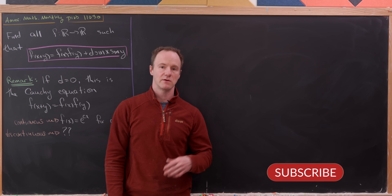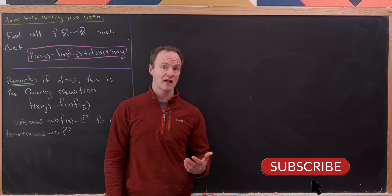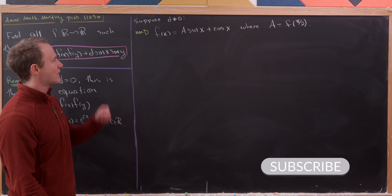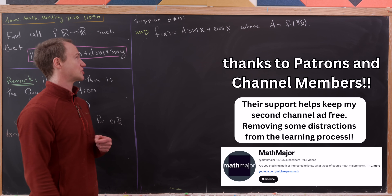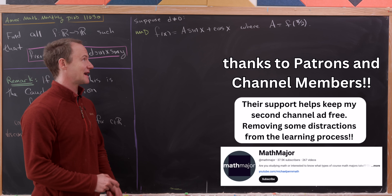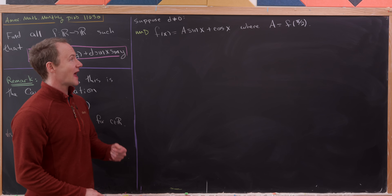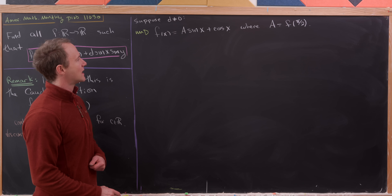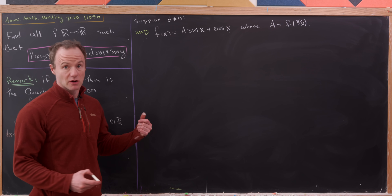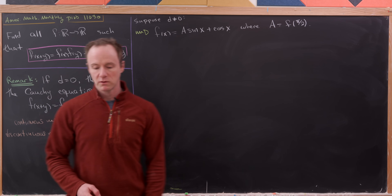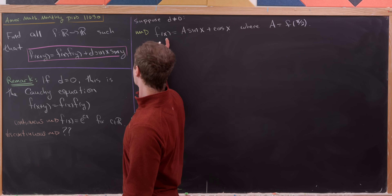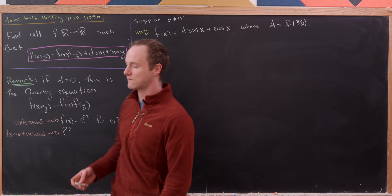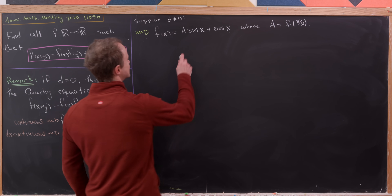So our function must have the form f(x) = A·sin(x) + cos(x), where A = f(π/2). Now we need to determine the possible values of A by plugging this form back into the original functional equation.